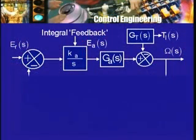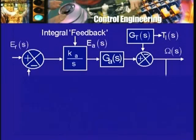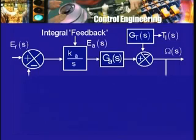We have our old block diagram in which omega S is related to 2 inputs: E a of S, the applied voltage input, and the load torque input, through 2 transfer functions. T L of S goes through a block whose gain I had called G T of S, T for torque. Then there is E a of S, the applied voltage, which goes through a block G a of S. These 2 are added together, one with a plus sign and the other with a minus sign, to produce omega S, the Laplace transform of the angular speed of the motor.